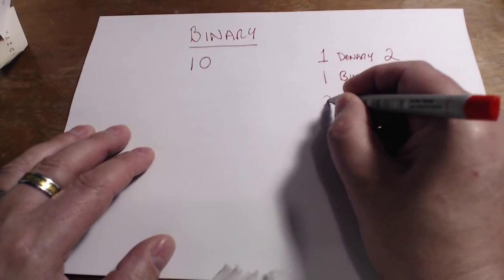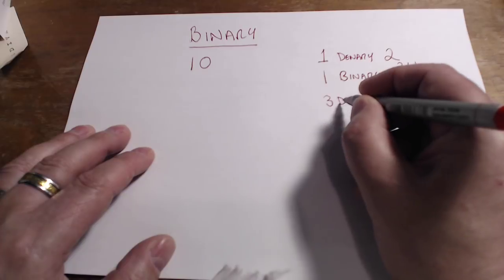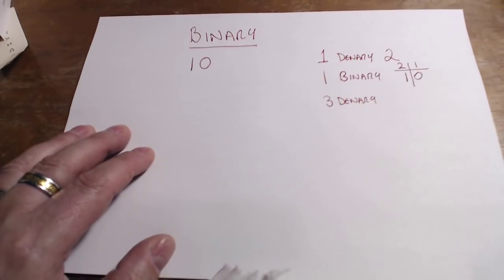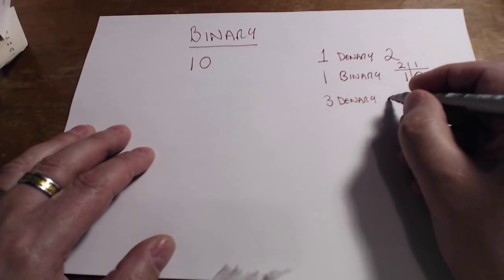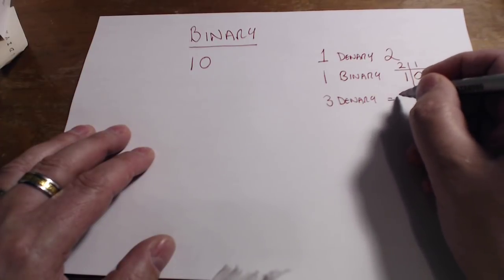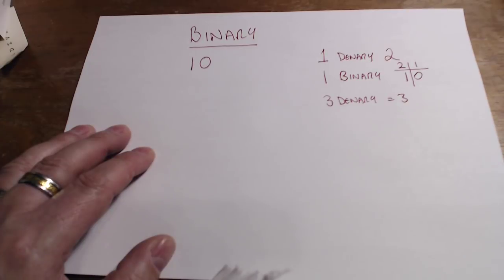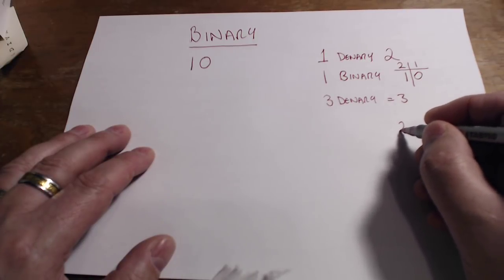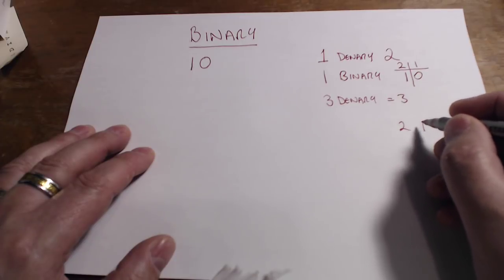Let's take this a little bit further then. Let's have a look at three. In denary, three is written as three, but we need to think about how we're going to write that in binary. If I put my two simple columns out...